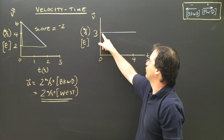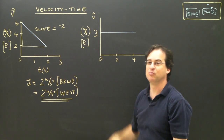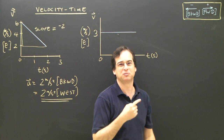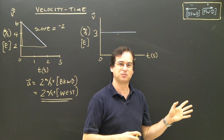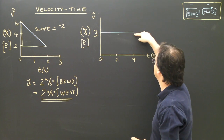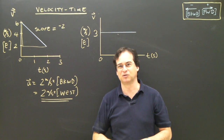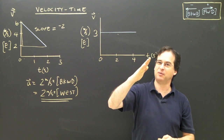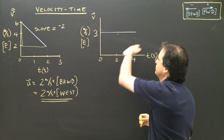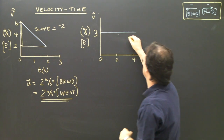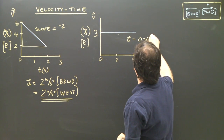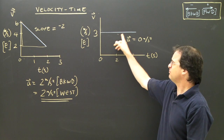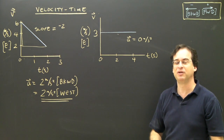At 0 seconds, I'm moving at positive 3 — that's 3 meters per second east. At 2 seconds, I'm still going 3 meters per second east. Even at 4 seconds, I'm going 3 meters per second. So I'm not getting faster or slower. The slope of this horizontal line is 0, so the acceleration is 0 meters per second squared. I'm not speeding up, not slowing down — the velocity is not changing. This is an object moving at a constant speed of 3 meters per second forward.